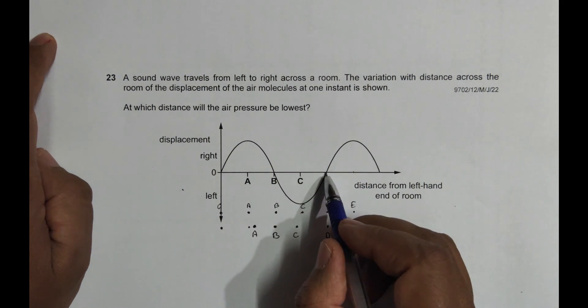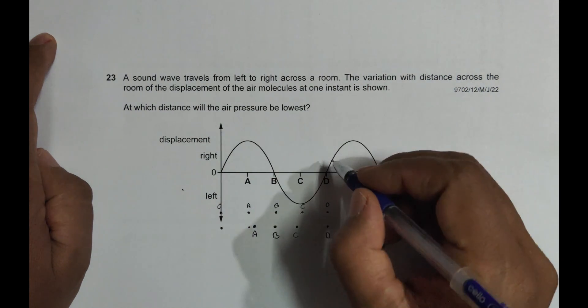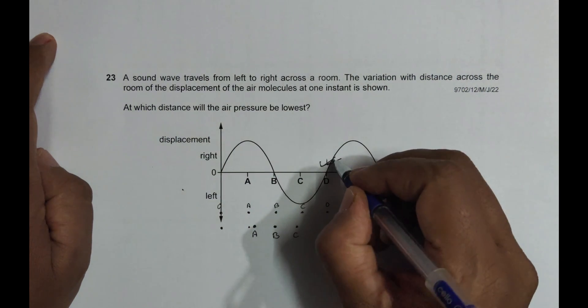So at position D the air pressure should be lowest. So this is the correct choice.